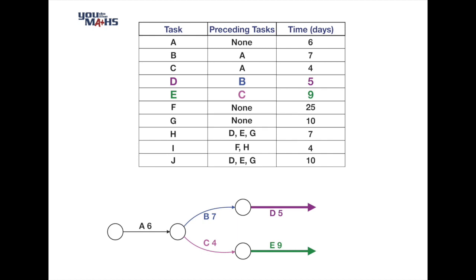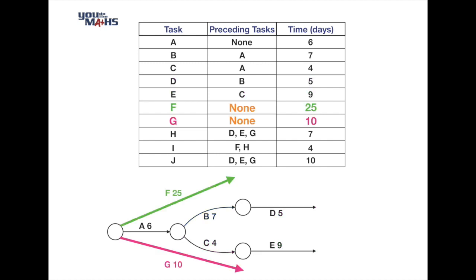The next two tasks, F and G, both have no preceding tasks, meaning they can commence at the beginning of the project network. We show those beginning from the same start circle where task A started.